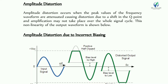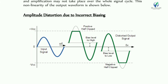Amplitude distortion occurs when the Q-point is not placed in the middle of the active region. If we want a distortion-free signal, the Q-point must be kept in the middle of the active region. When the Q-point shifts above or below, information in the signal is lost — that is called amplitude distortion.